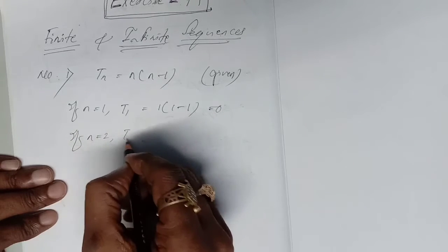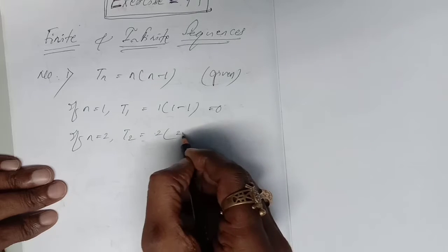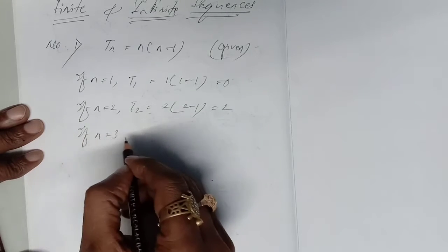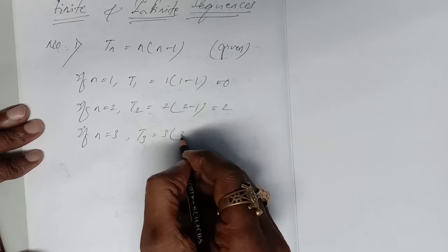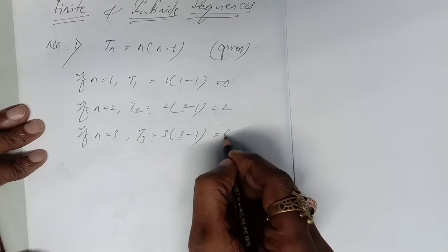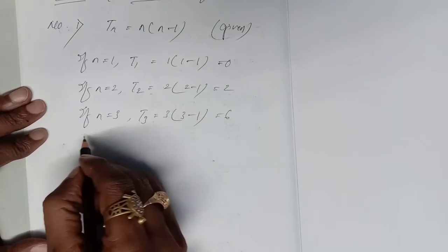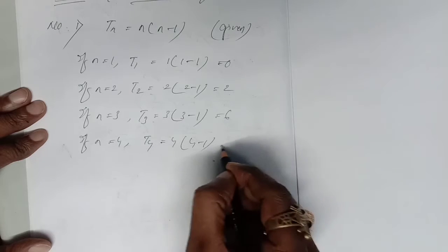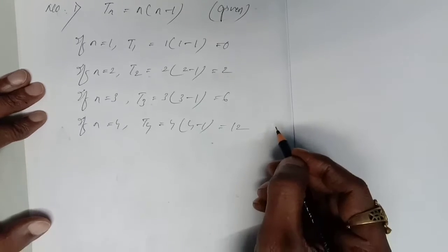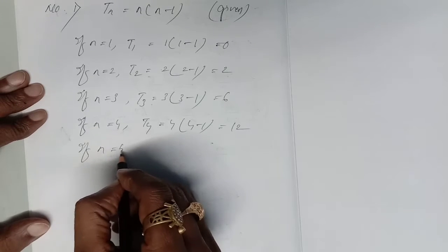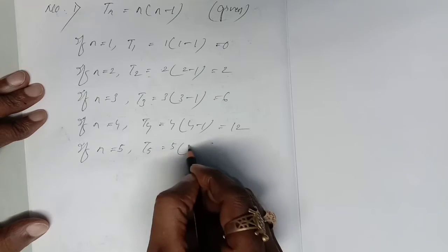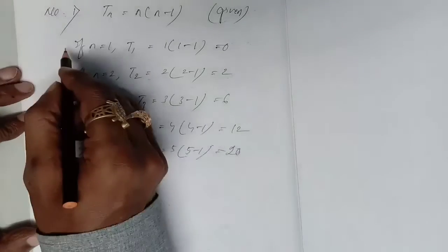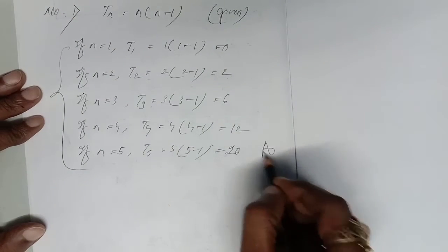If n equal to 2, that is the second term: 2 × (2−1) = 2. If n equal to 3, third term: 3 × (3−1) = 3 × 2 = 6. If n equal to 4, fourth term: 4 × (4−1) = 4 × 3 = 12. Next, fifth term putting n equal to 5: T5 = 5 × (5−1) = 5 × 4 = 20. This is the way of finding the first 5 terms of the given nth term.